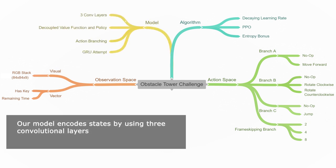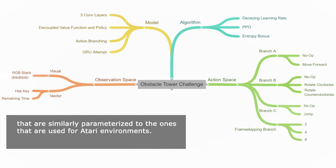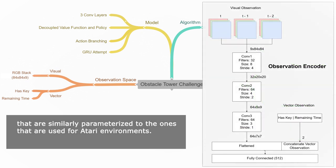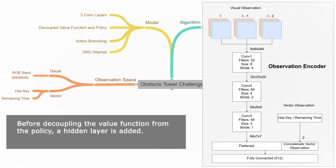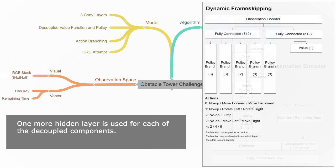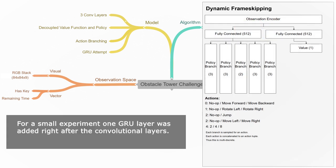Our model encodes states by using three convolutional layers that are similarly parameterized to the ones used for Atari environments. Before decoupling the value function from the policy, a hidden layer is added, and one more hidden layer is used for each of the decoupled components. For a small experiment, one GRU layer was added right after the convolutional layers.